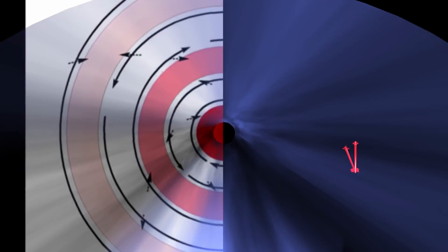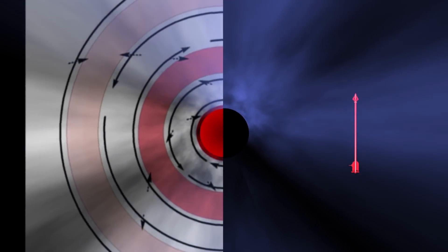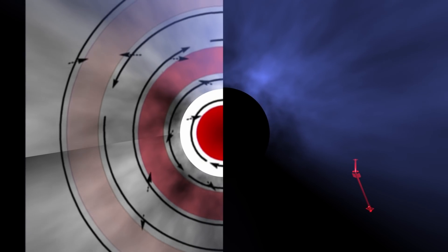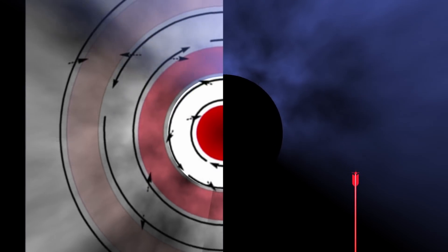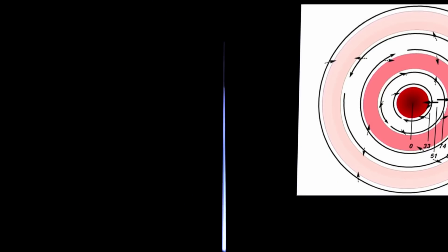Don Scott's model of a Bessel function Birkeland current demonstrates that the material inside these forms into concentric shells. This is due to the fact that the magnetic field changes as you move further from the axis of the Birkeland current.